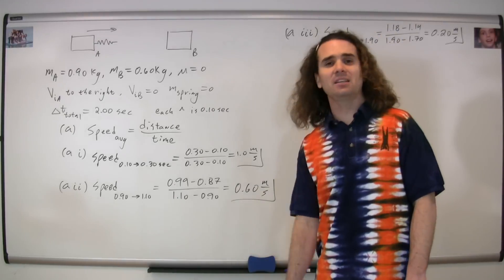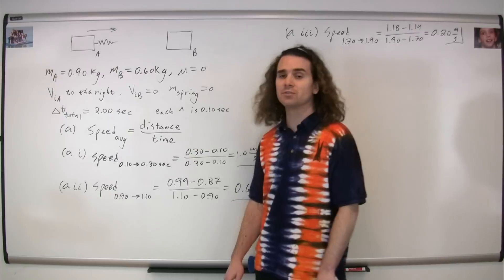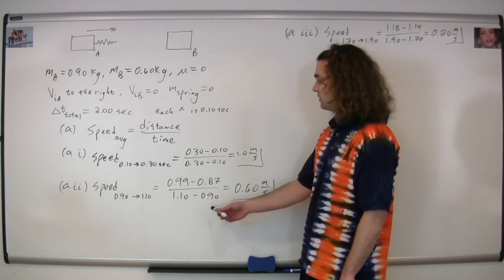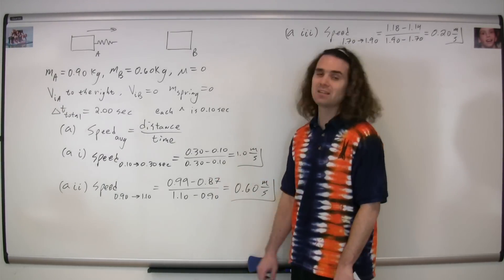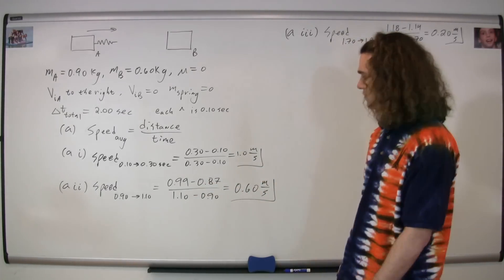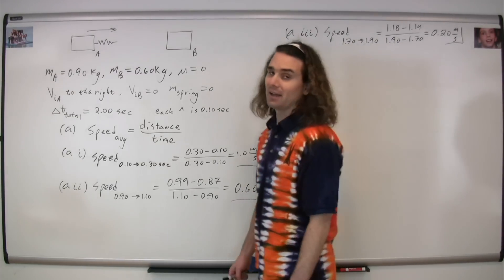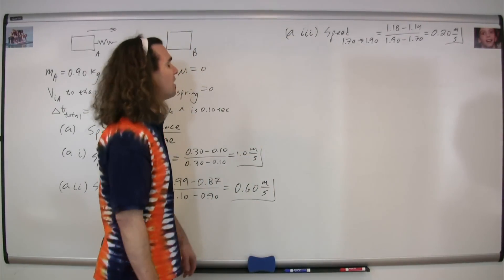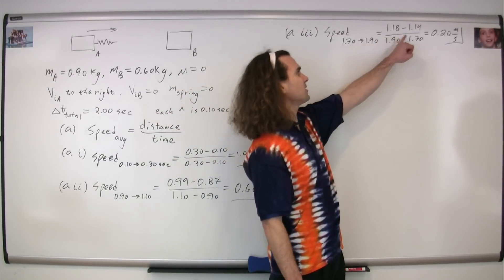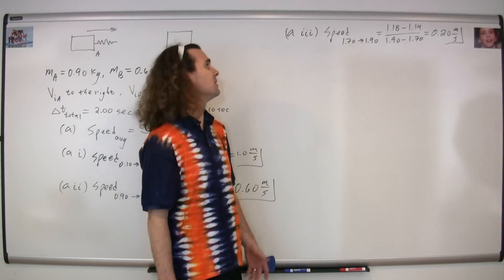For parts aii and aiii, we're again looking for average speed. Part aii covers 0.90 to 1.10 seconds. The position at 1.10 s is 0.99 m and at 0.90 s is 0.87 m, giving 0.99 minus 0.87 divided by 1.10 minus 0.90, for an average speed of 0.60 meters per second. Part aiii covers 1.70 to 1.90 seconds: 1.18 minus 1.14 divided by 1.90 minus 1.70 equals 0.20 meters per second.